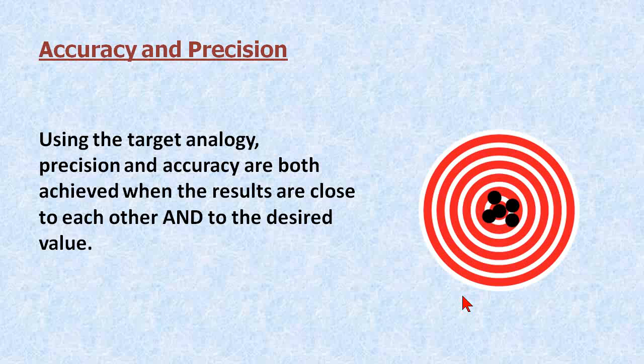In our last target analogy, we have a representation of both accuracy and precision. The holes are clustered around the center of the desired value, or the center of the target, and the holes are clustered around each other, which represents precision.